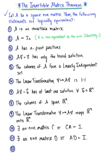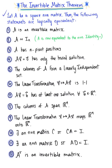Another logically equivalent statement is that the transpose of matrix A is an invertible matrix. So these 12 statements are all logically equivalent, and this is what we've been building to throughout this course — establishing all of these connections so that we can draw on them and use them as shortcuts going forward.